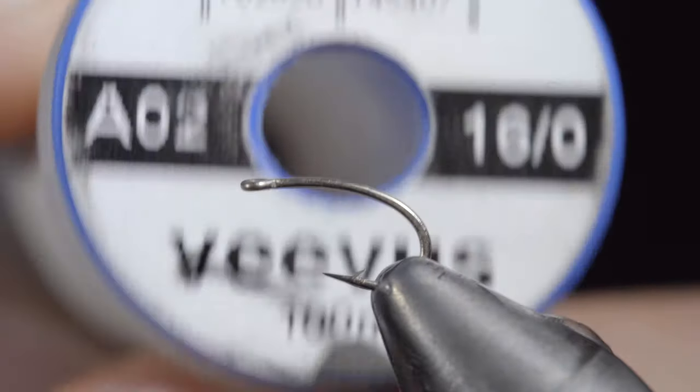These flies will help you catch more fish this winter. To start this pattern, we'll grab some vivas thread in white and secure it to our hook shank.